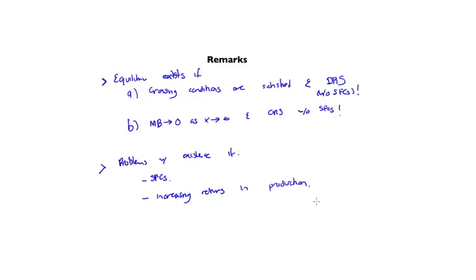Let me emphasize that by increasing returns in production, I don't mean cost functions that have this local increase in returns, and then eventually this decreasing returns to scale locally. I mean something literally that looks like this forever. It never reaches this decreasing returns to scale region.